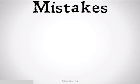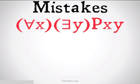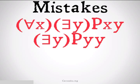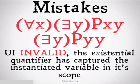Some common mistakes when using relations, overlapping quantifiers, and the rules of inference. First: from 'for all X, there exists a Y such that X bears relation P to Y,' concluding 'there exists a Y such that Y bears relation P to Y' — this is universal instantiation but it's invalid. The existential quantifier over Y has captured the instantiated variable in its scope. When you're instantiating, you're unquantifying a variable — you can't have it then become secretly quantified by the quantifier already in front. You'd have to instantiate to X, Z, or another variable not already quantified in that statement.